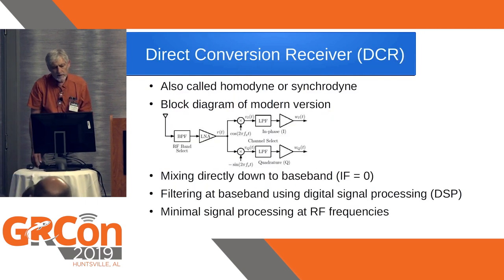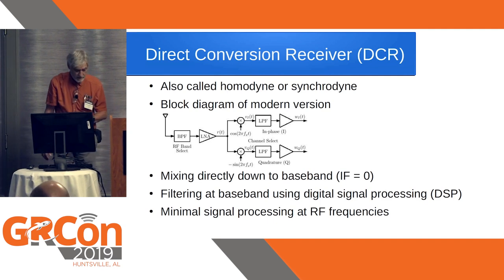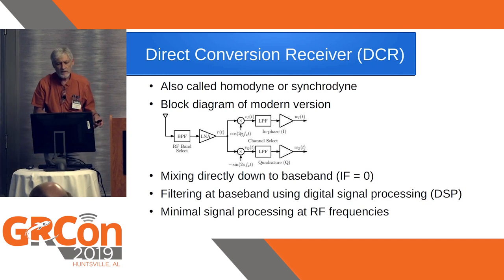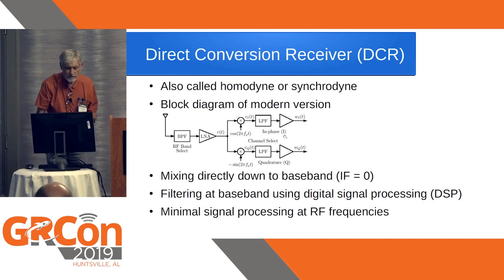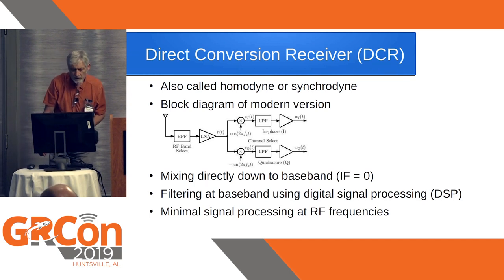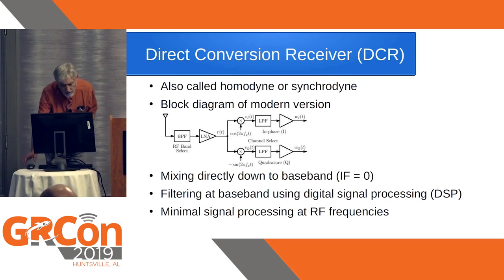The direct conversion receiver — also called homodyne or synchrodyne receiver — has a front end with a band-pass filter and low-noise amplifier, but then mixes down directly to baseband using cosine and sine as local oscillators. That gives you the I and Q outputs — the in-phase and quadrature signals. Since the intermediate frequency equals zero, there is no image frequency problem. Filtering is done at baseband, typically using digital signal processing, so no bulky filters are needed, and minimal signal processing occurs at RF frequencies.